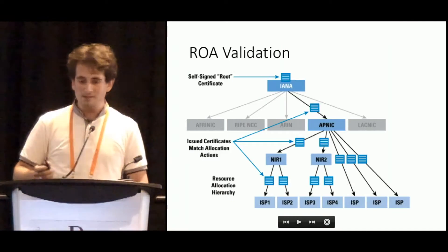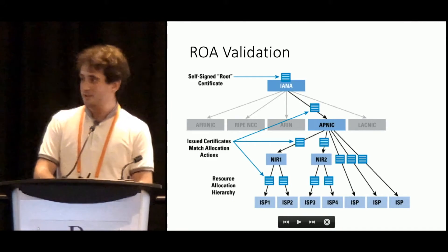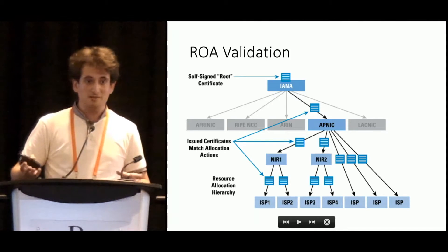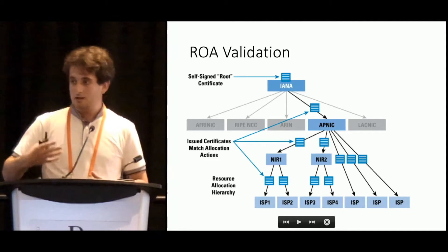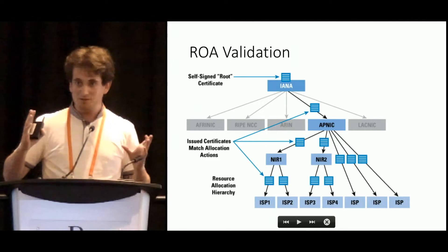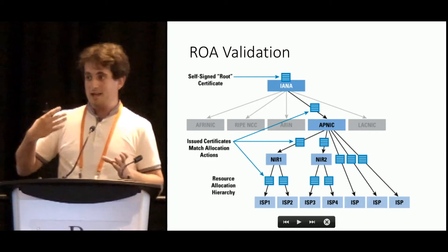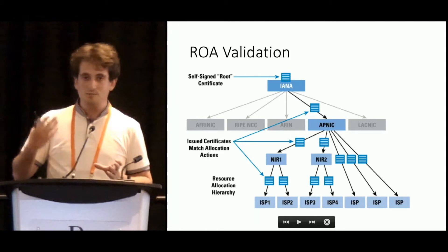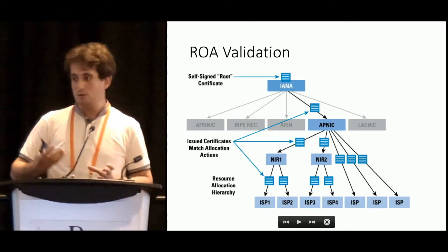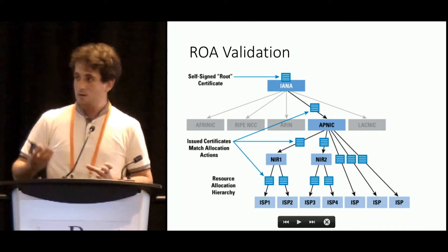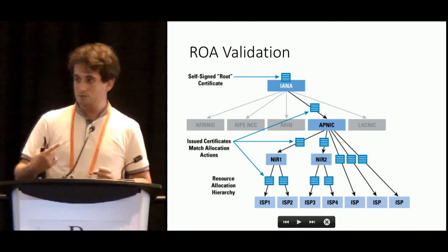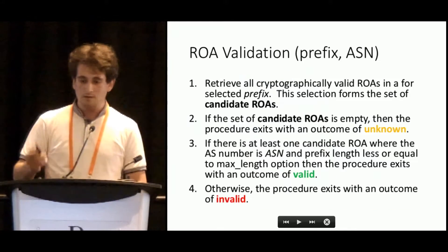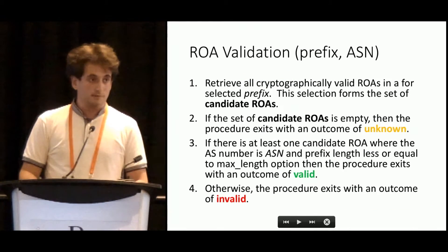The next one is Route Origin Validation Procedure. I'm not going to discuss RPKI infrastructure in detail. In a simplified manner, we can think about RPKI as a distributed database of signed objects, where you can easily get a cache to use locally.